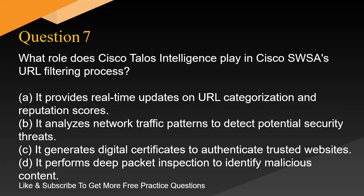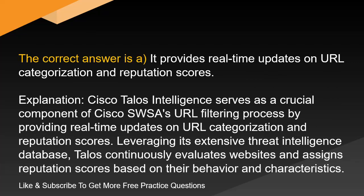Question 7. What role does Cisco Talos Intelligence play in Cisco SWSA's URL filtering process? A. It provides real-time updates on URL categorization and reputation scores. B. It analyzes network traffic patterns to detect potential security threats. C. It generates digital certificates to authenticate trusted websites. D. It performs deep packet inspection to identify malicious content. The correct answer is A. It provides real-time updates on URL categorization and reputation scores. Explanation. Cisco Talos Intelligence serves as a crucial component of Cisco SWSA's URL filtering process by providing real-time updates on URL categorization and reputation scores. Leveraging its extensive threat intelligence database, Talos continuously evaluates websites and assigns reputation scores based on their behavior and characteristics.